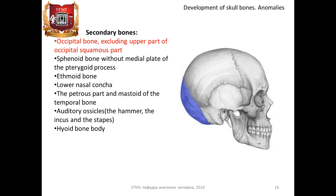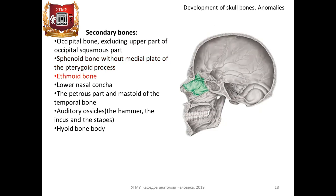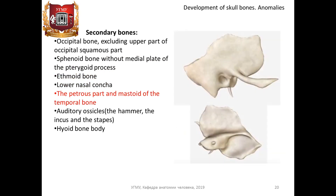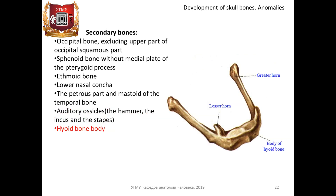Secondary bones include: occipital bone excluding the upper part of the occipital squamous part; sphenoid bone without the medial plate of the pterygoid process; ethmoid bone; lower nasal concha; and the petrous part and mastoid of the temporal bone. Also the auditory ossicles: the hammer (malleus), the incus, and the stapes. And the hyoid bone body.